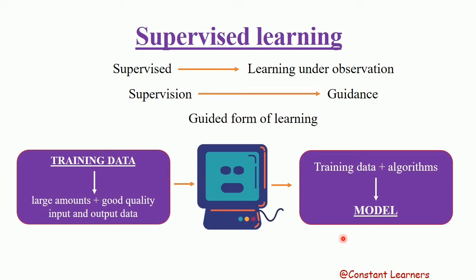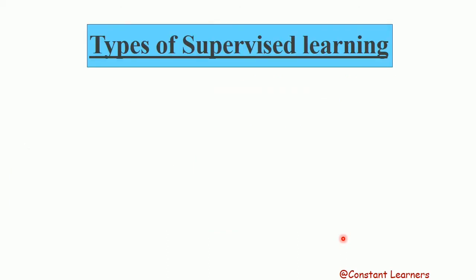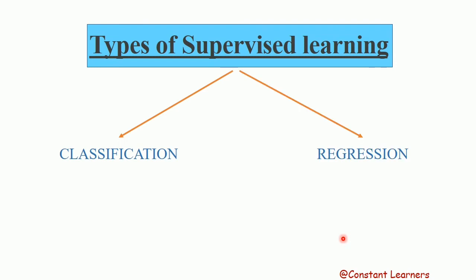The algorithm used is proper and the model created is perfect, meaning the training data given initially was also of good quality. So this is supervised learning. Now there are two types of supervised learning: one is classification and the other is regression.